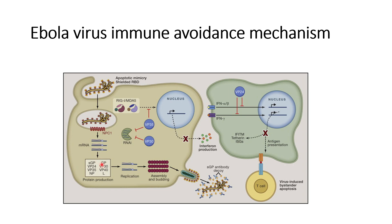What happens is that there is continuous replication of the virus, and the final assembly and budding occurs. The virus is secreted outside the cells, but during secretion, the SGP is also separated. What SGP does is prevent the antibody generated against GP by binding to the receptors of the GP antibody, so the actual virus will not get affected by this GP antibody.